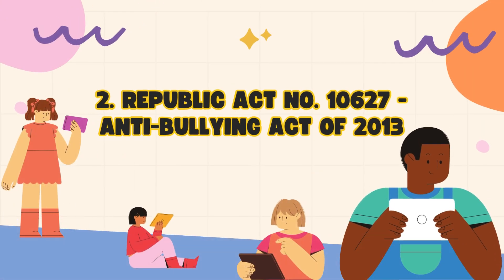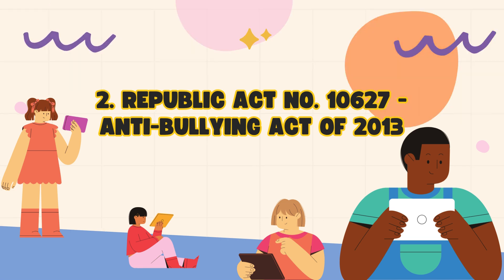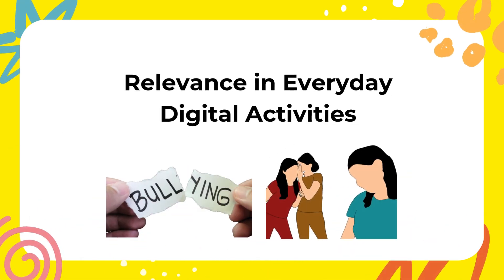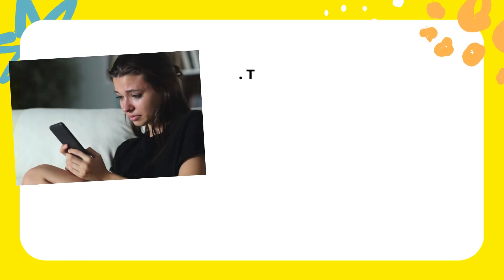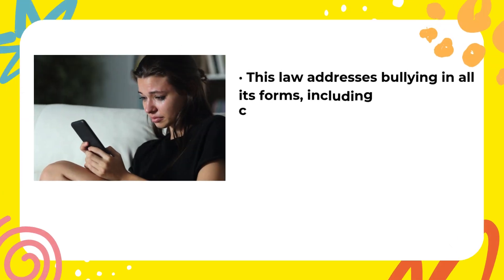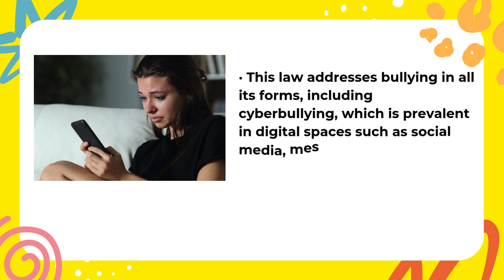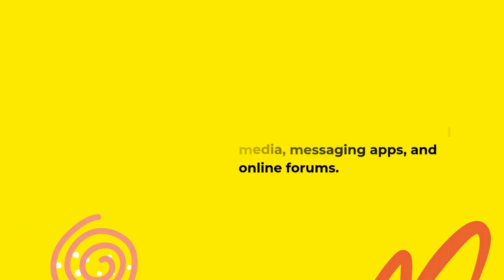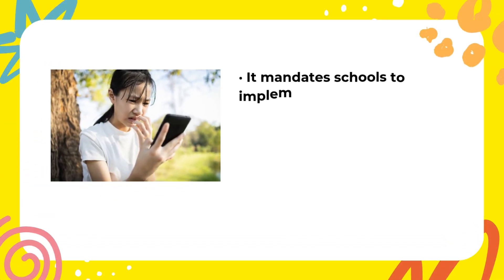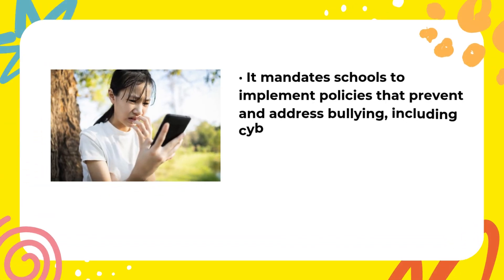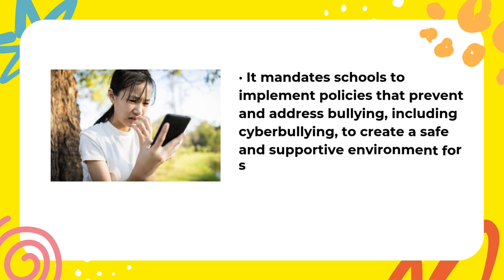Republic Act No. 10627 — Anti-Bullying Act of 2013. Relevance in Everyday Digital Activities: This law addresses bullying in all its forms, including cyberbullying, which is prevalent in digital spaces such as social media, messaging apps, and online forums. It mandates schools to implement policies that prevent and address bullying, including cyberbullying, to create a safe and supportive environment for students.